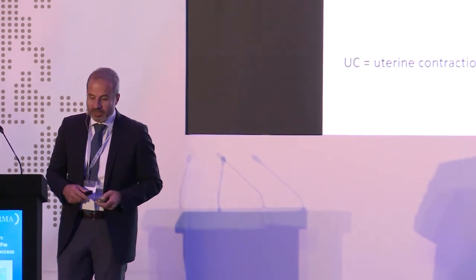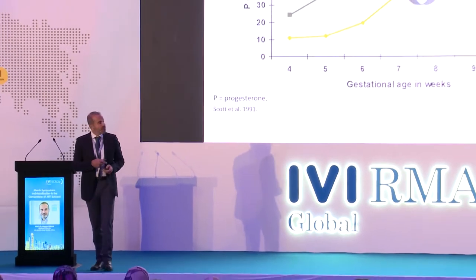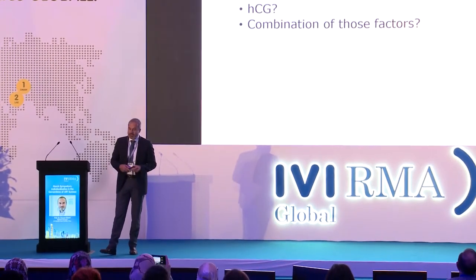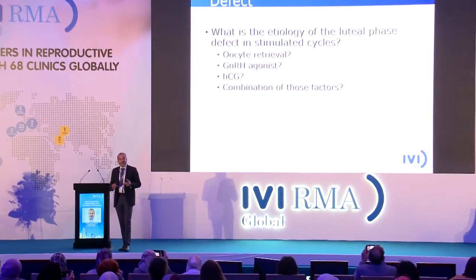Progesterone works on the endometrium and on the myometrium. Its effect on the myometrium is important because it reduces the contractibility of the uterine muscle, which increases the implantation rate by reducing uterine contractions. Why seven weeks? Because at seven weeks you have the luteoplacental shift.